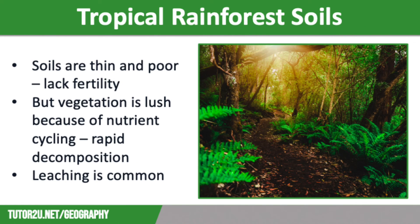However, despite the rich vegetation found in tropical rainforests, the soils are really thin and poor and not very fertile. The vegetation is so luxuriant because of nutrient cycling between biomass, which is the living organisms, the leaf litter made of dead wood, leaves and animal remains, and the soil. Leaf litter decomposes rapidly because of the humidity in the tropical rainforests. However, the nutrients released are often washed away by the heavy rainfall — a process known as leaching — before becoming part of the soil.